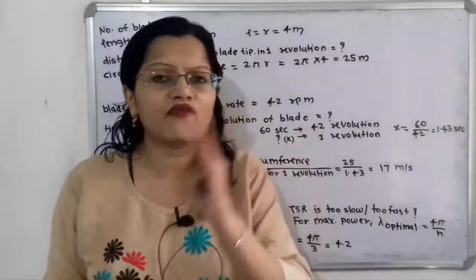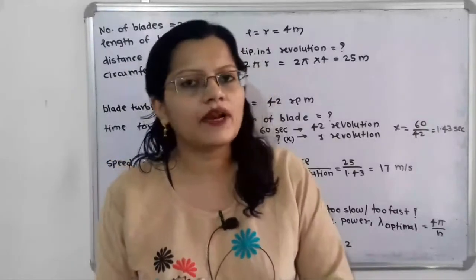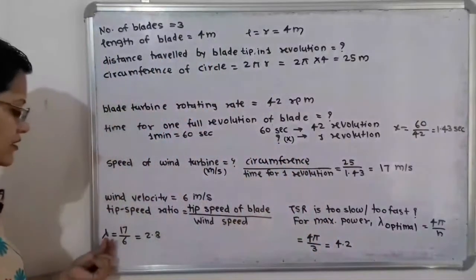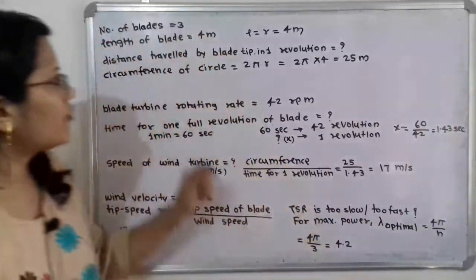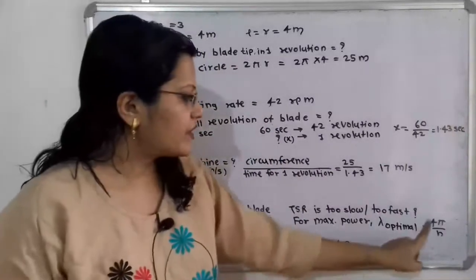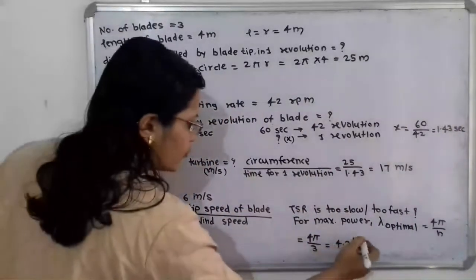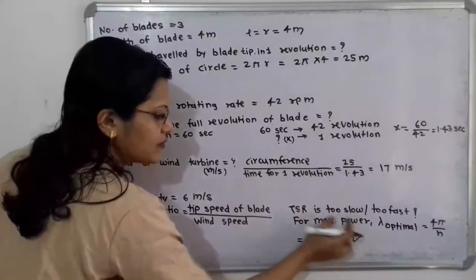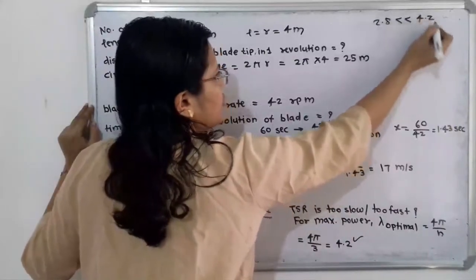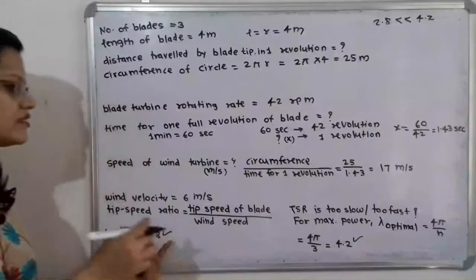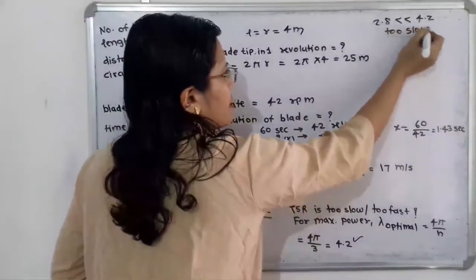To determine if this is too slow or too fast for maximum power, we calculate the optimal tip speed ratio: λ_optimal = 4π ÷ n, where n is the number of blades (3). So λ_optimal = 4π ÷ 3 = 4.2. Comparing: the actual TSR is 2.8, which is much less than the optimal 4.2. Therefore, this tip speed ratio is too slow for maximum power.